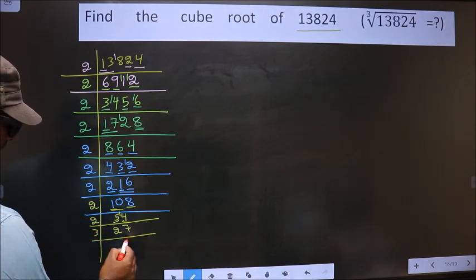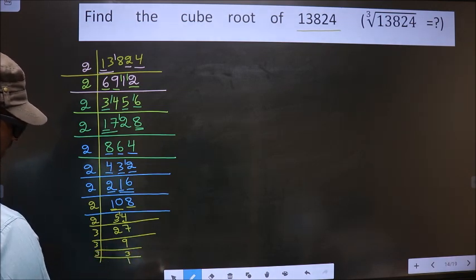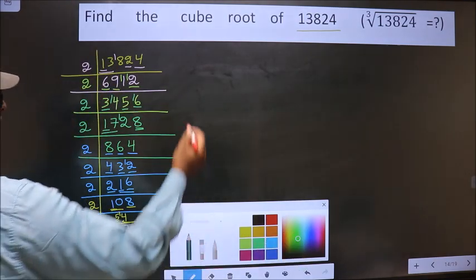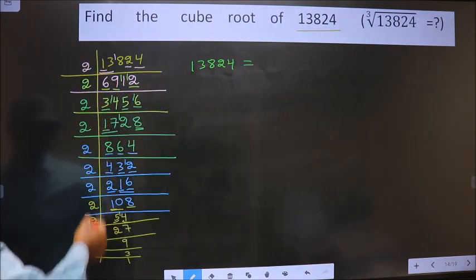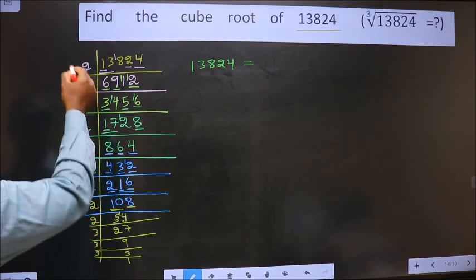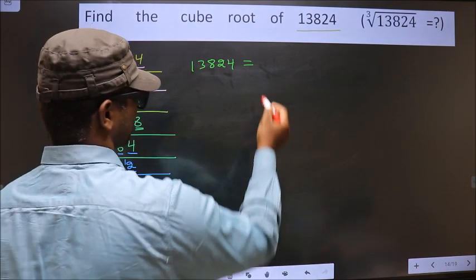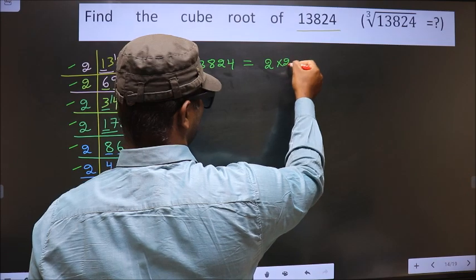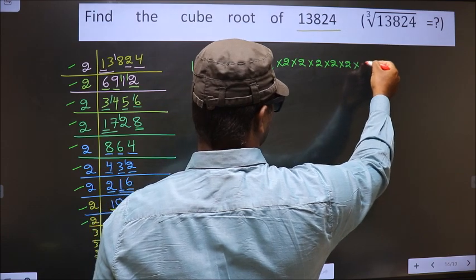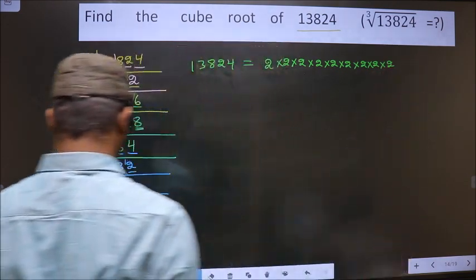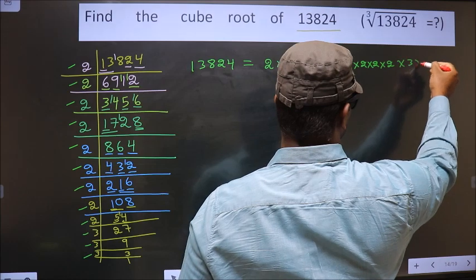Now 27 — 3 nines are 27. 9 — 3 threes are 9. Now 3 is a prime number, so 3 ones are 3. So 13824 is equal to the product of all these prime factors. How many times do we have 2? We count: 1, 2, 3, 4, 5, 6, 7, 8, 9 — so 2 appears 9 times. And 3 is present 3 times.